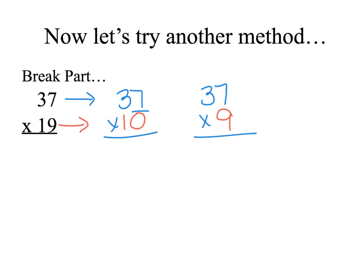Using the rule for multiplying by 10s, I can put this 0 in the answer and simply multiply 1 times 37. 1 times 7 is 7 and 1 times 3 is 3. I can multiply my 9 times 37. 9 times 7 is 63. Put down the 3 and regroup the 6.